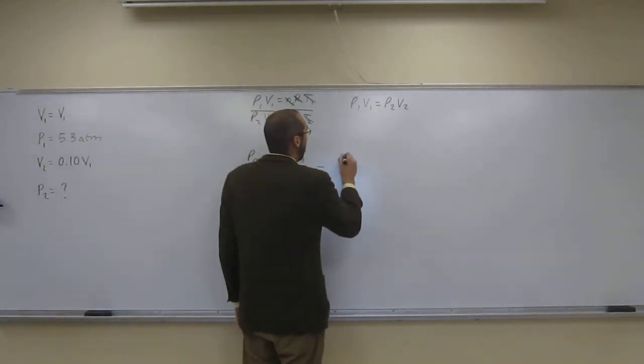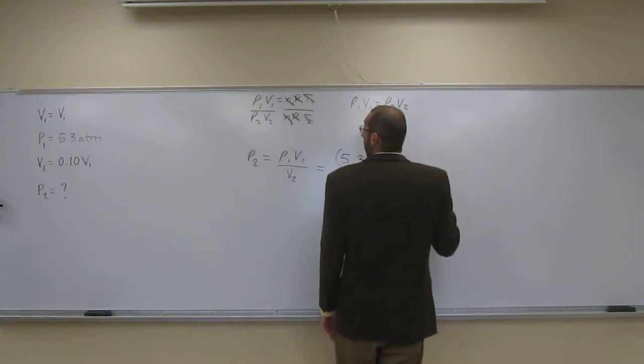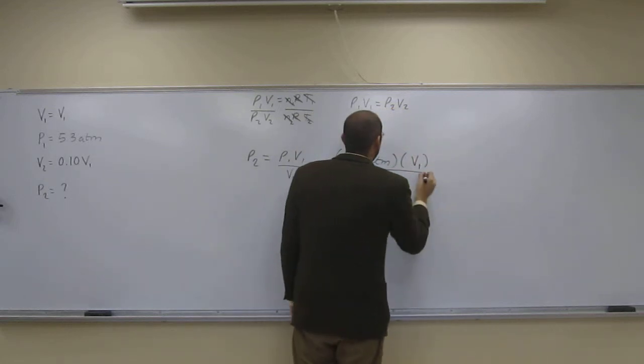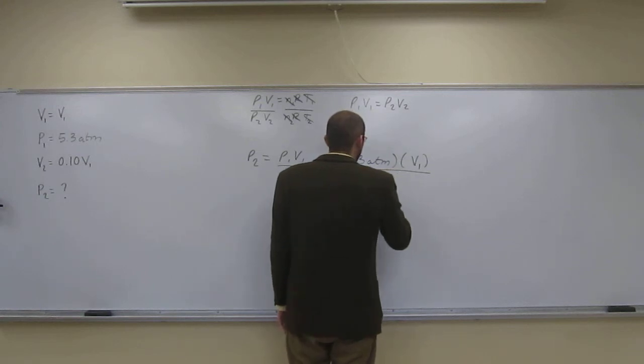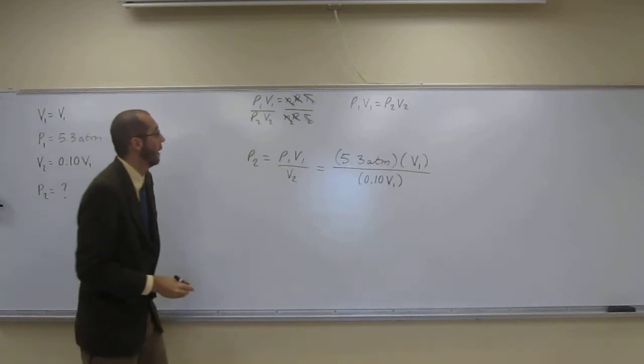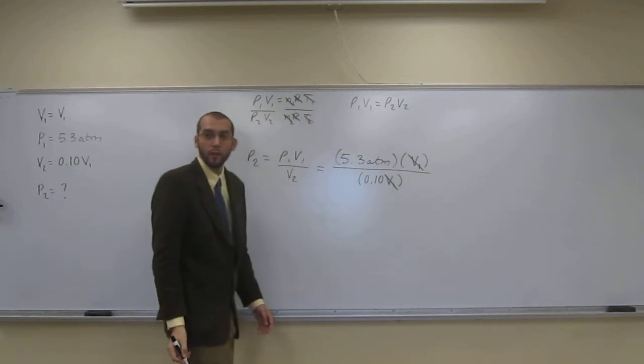So, it's going to be 5.3 atm times V1, which is just V1, divided by 0.10 V1, like that. Okay? So, when we do this, cancel, cancel, like that.